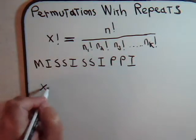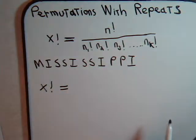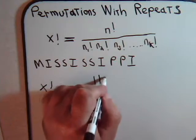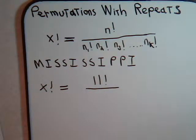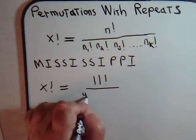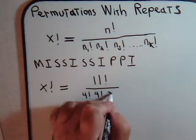We determined that the number of factorials is equal to the total number of letters in the word, that's 11, divided by the number of times each letter is repeated. The i's are repeated four times, the s's are repeated four times, and the p's are repeated twice.